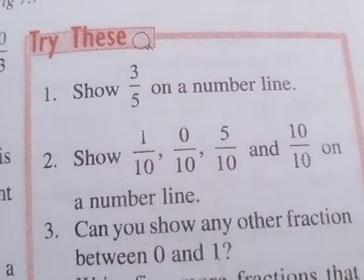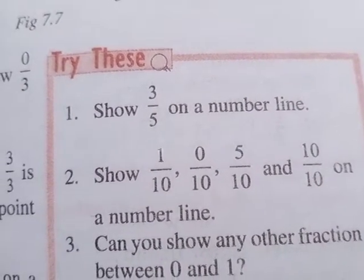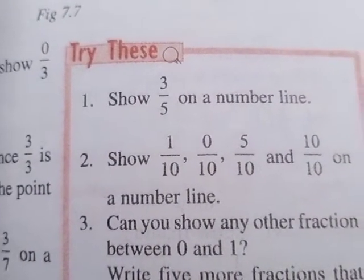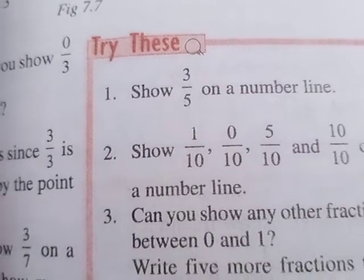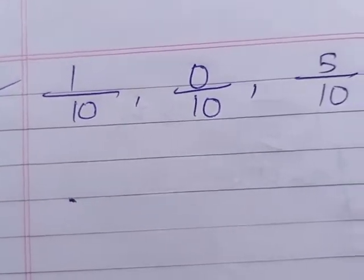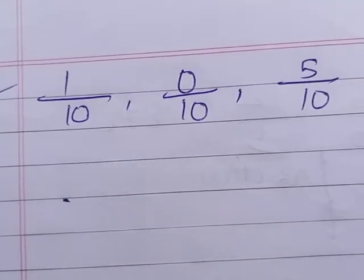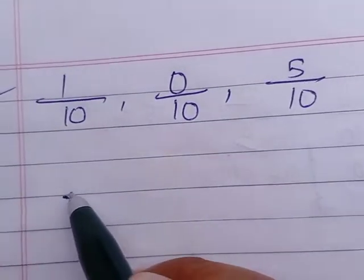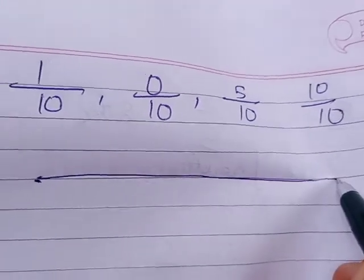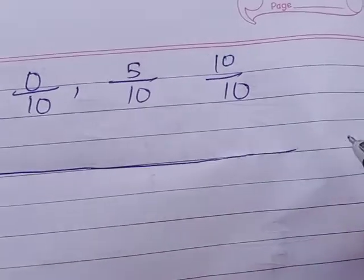What type of fractions are given here? All these fractions are proper fractions. As I told you, proper fractions are all less than one. They will be shown on the number line between 0 and 1, because less than 1 is always in between 0 to 1.